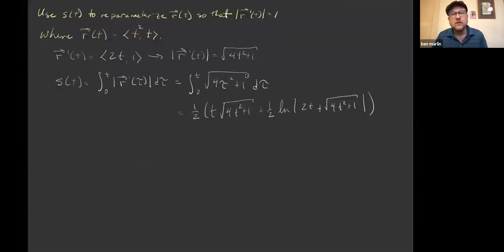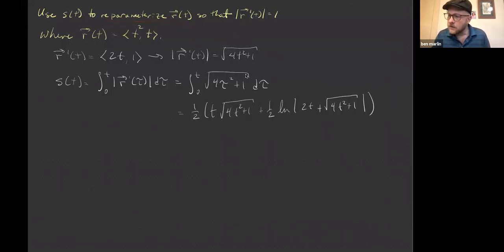I've got a quick example for us to look at. Bear with me as we get the iPad to show the example. Unfortunately, the things we're working on right now involve super convoluted calculations, so I've had to work them out ahead of time and then talk our way through. The problem we're talking about: we're going to re-parameterize an r-vector of t so that the magnitude of r'(t) — in other words, the speed — is equal to 1. The r-vector of t we're starting with is (t², t).